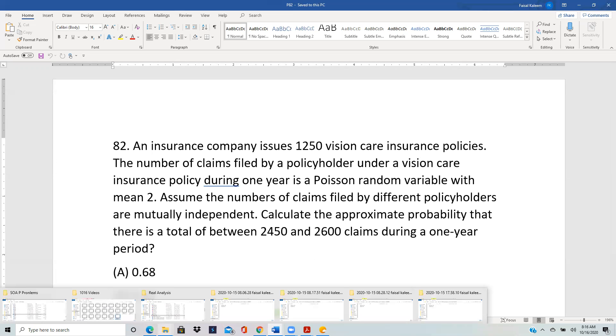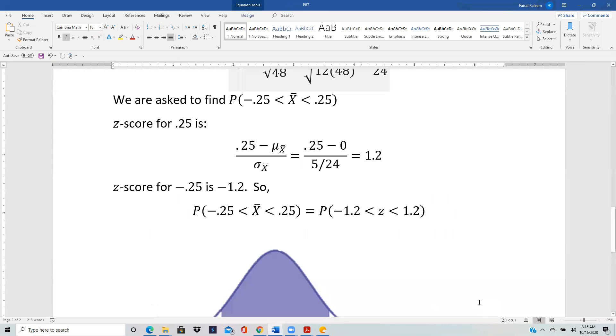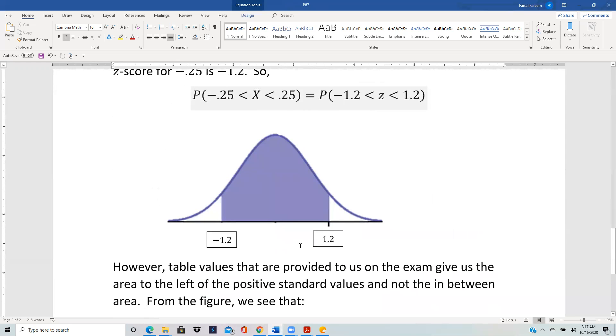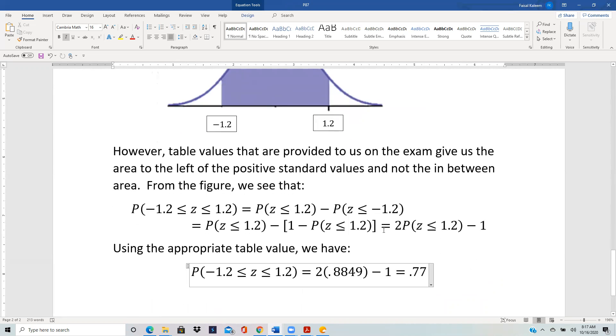With that out of the way, let's return to problem 87. We want P(-1.2 < Z < 1.2). We can see from the picture that that's P(Z < 1.2) minus P(Z < -1.2). When you subtract those two, you get the middle area.